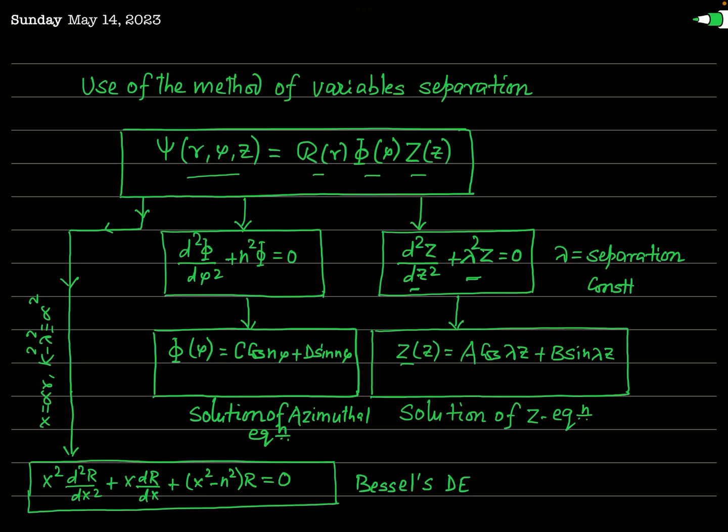The solution of the Z equation is given by Z(z) equals A·cos(lambda·z) plus B·sin(lambda·z), where A and B are arbitrary constants evaluated using appropriate boundary conditions for a particular physical problem.